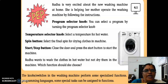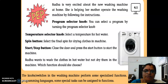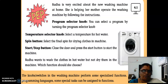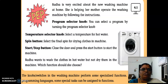What are all the instructions? First one: program selector knob — you can select a program by turning the program selector knob. Temperature selector knob — to select a temperature for hot water. Spin button — select the final spin for drying the clothes in the machine. Start and stop button — for closing the door and press the start button to start the machine. So Radha wants to wash the clothes in hot water but not to dry them in the machine. Which function should she choose?